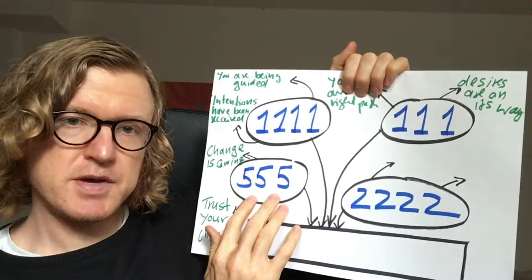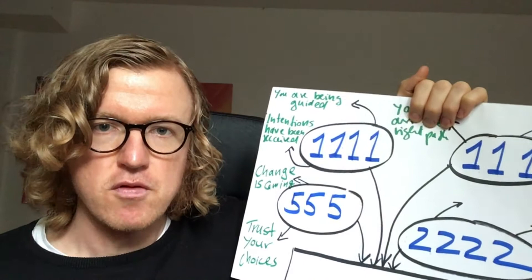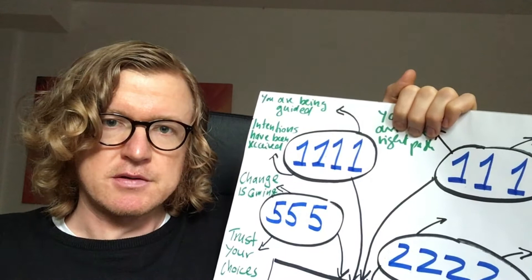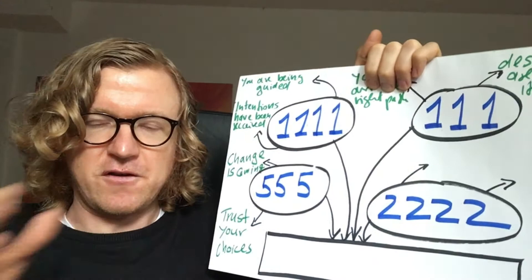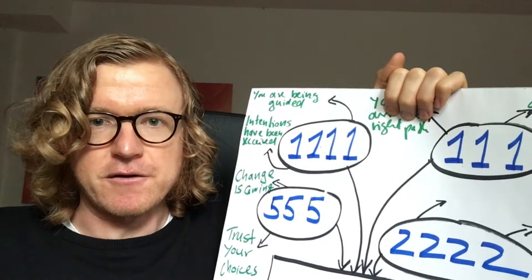Another core meaning of 555 is to trust your choices more. So if there has been a decision that you have made but don't really know if it was the right or wrong decision, trust that it was the right decision. And if there is a decision you have been putting off or you struggle with deciding, it's a reminder to trust your initial impulse and you're going to make the right choice when you trust yourself.